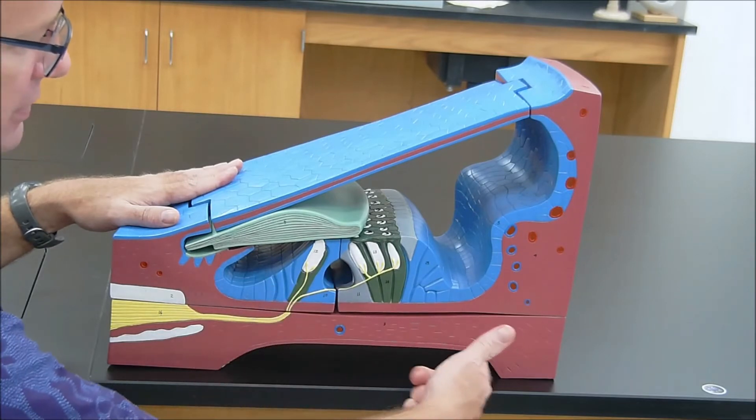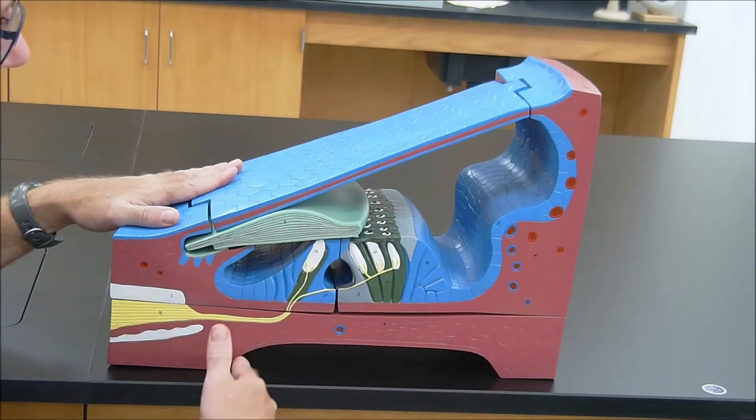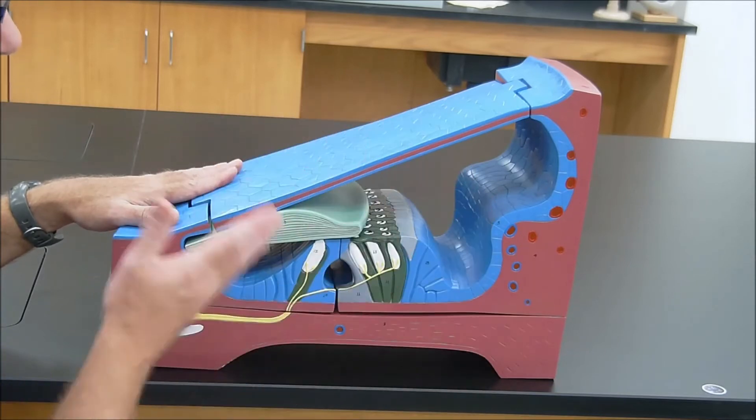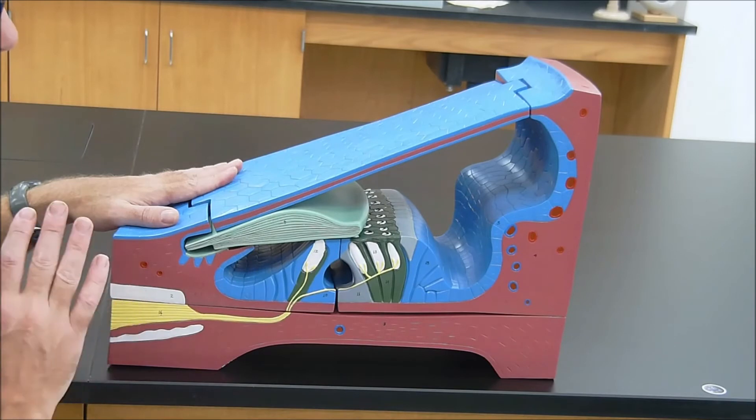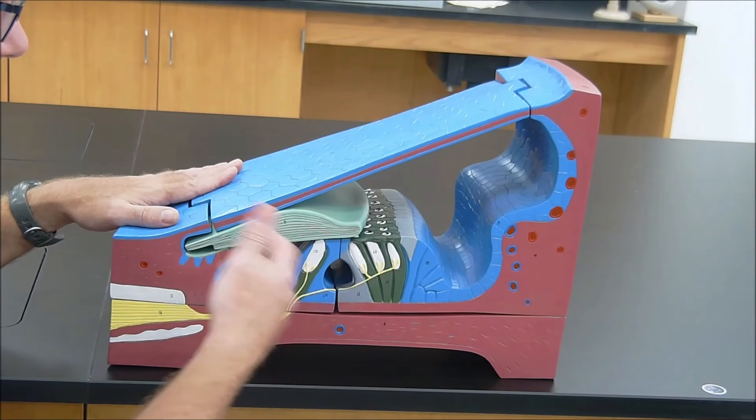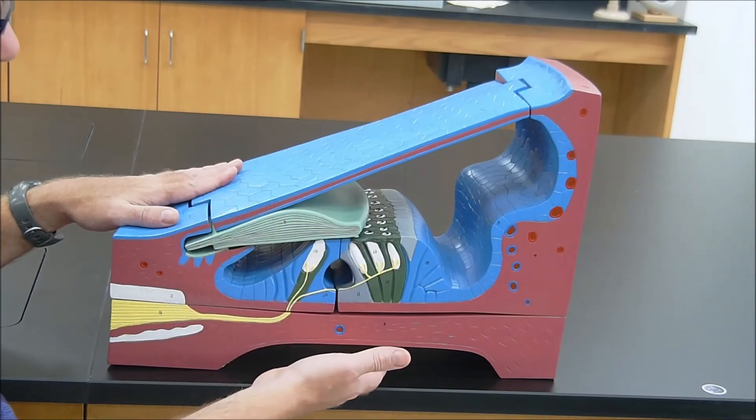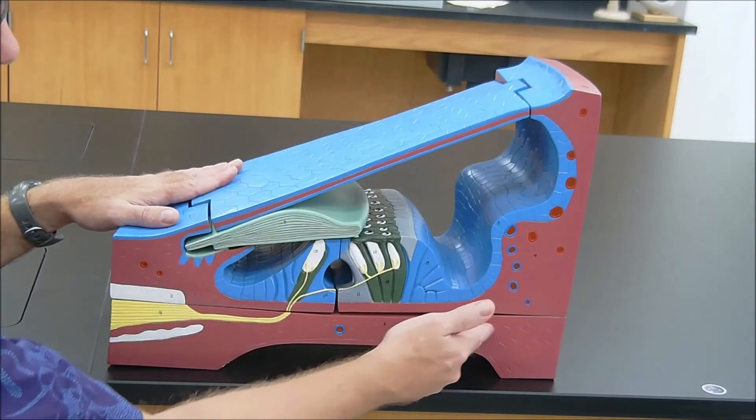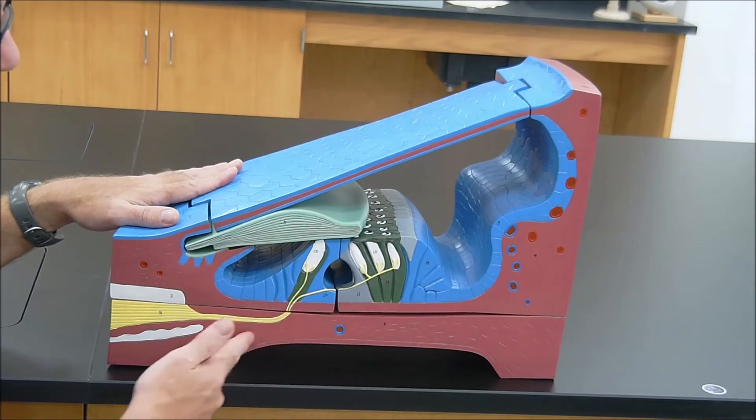And finally, down here we have another duct or tube called the scala tympani. And so it's important to realize that these tubes are fluid-filled, and then as the oval window is pressed upon by the stapes, it forces fluid through these tubes. Fluid is non-compressible, and so what happens is we get vibrations in this membrane right here called the basilar membrane.